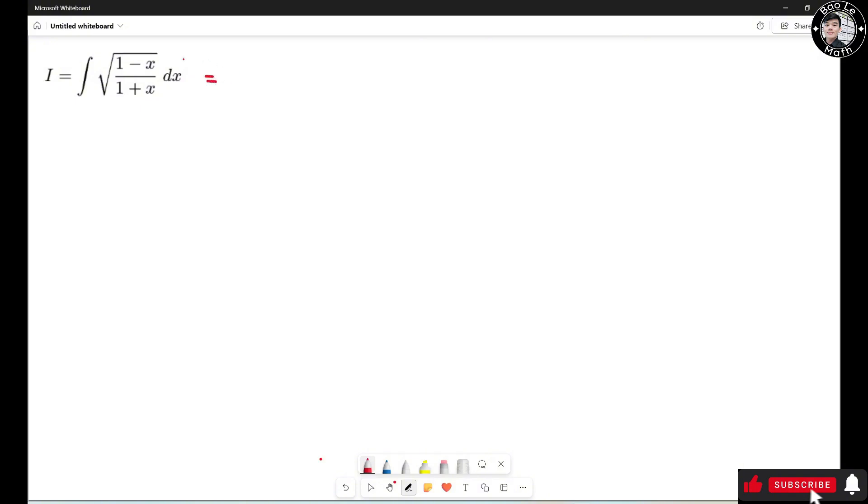I'm going to multiply the top and bottom by square root of 1 minus x. So it turns out to be the integral of 1 minus x over square root of 1 minus x square.